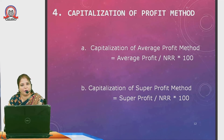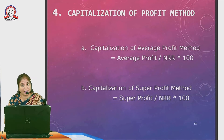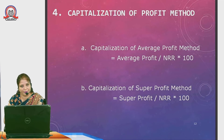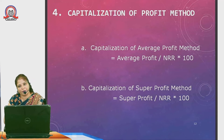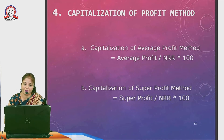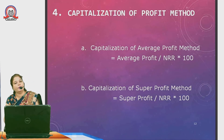The capitalization of profit method is the fourth method in valuation of goodwill. It is further divided into: capitalization of average profit method and capitalization of super profit method. In both, goodwill is calculated as: Average Profit ÷ Normal Rate of Return × 100, and Super Profit ÷ Normal Rate of Return × 100 respectively.